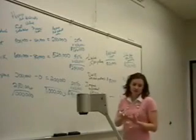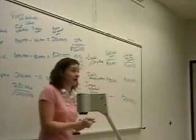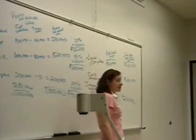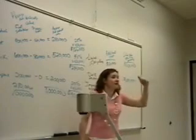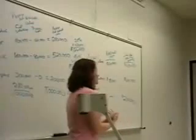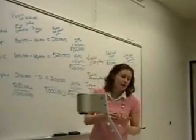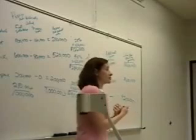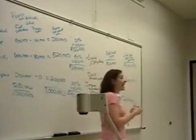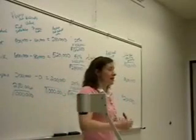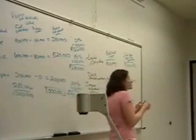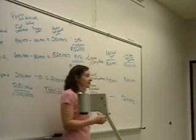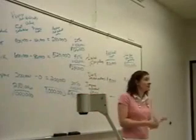We've got three methods that's easily used to allocate joint costs. All we're going to allocate is the joint cost. We don't allocate any additional processing after the split-off point. Those are directly traceable to the product. Physical quantities method, we don't know what the sales value is going to be at all. The sales price goes up and down daily, we can't figure this amount out even. So the best we can do is use something we can measure like gallons or pounds, something along those lines, and allocate based on physically what our output is, and allocate the cost based on that.